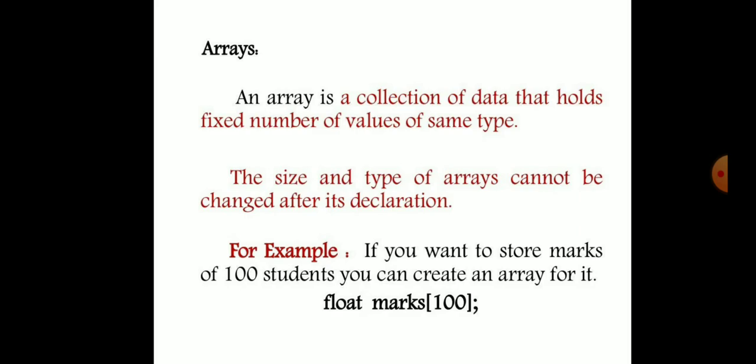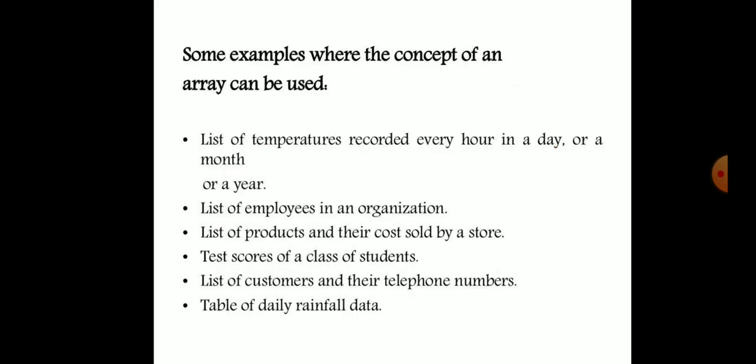The properties of the array: each element of an array is of the same data type and carries the same size — for example, integer is 4 bytes. Elements of the array are stored at contiguous memory locations where the first element is stored at the smallest memory location. Elements can be randomly accessed since we can calculate the address of each element with the given base address and size of the data element. For example, to store marks of 100 students, you create: float marks[100].